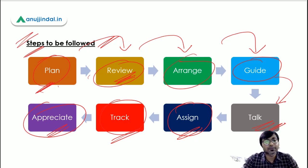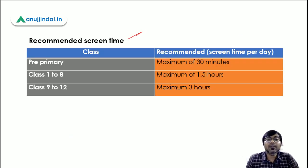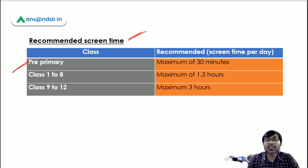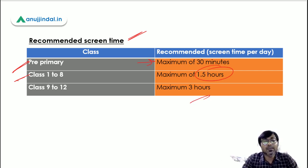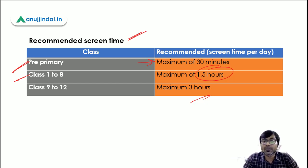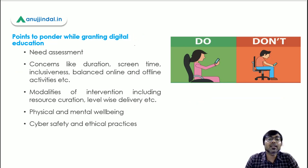Now, what are the recommended screen times for different sections of students? For pre-primary, a maximum of 30 minutes of screen time. For Class 1 to 8, it will be a maximum of 1.5 hours. And for Classes 9 to 12, it will be a maximum of 3 hours. These are the maximum recommended times, and this question can be asked in the exam.